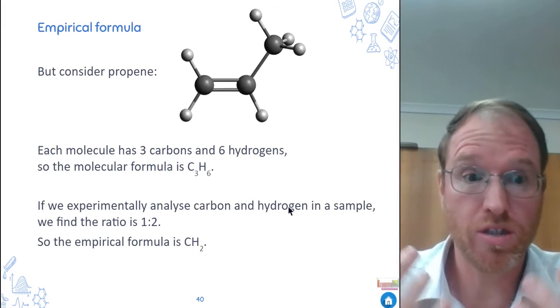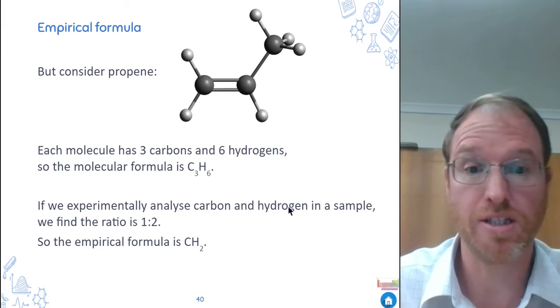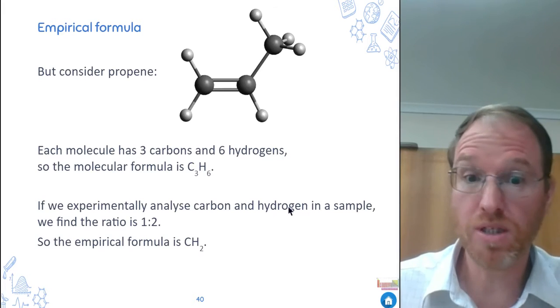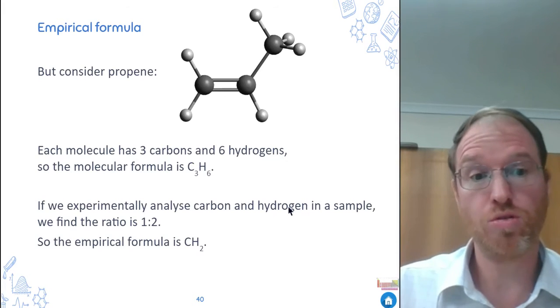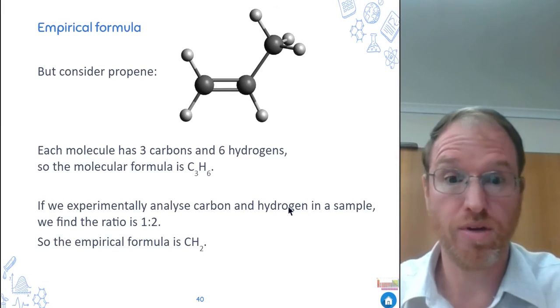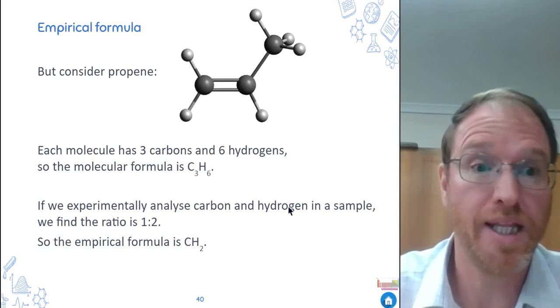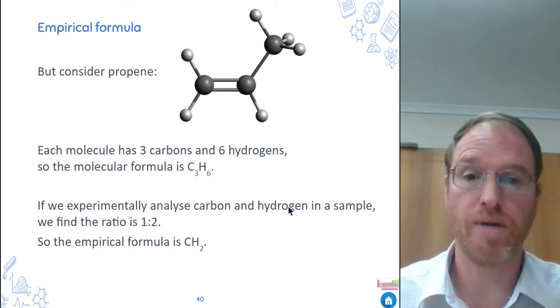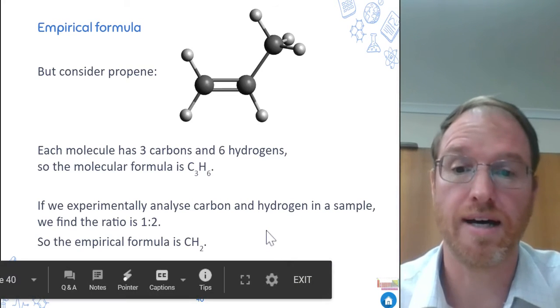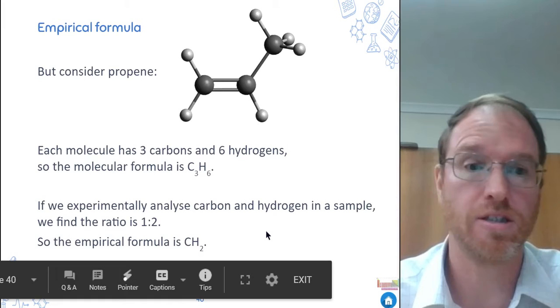We don't know what it is. We would just know it's CH2 as an empirical formula, meaning it could be CH2, it could be C2H4, it could be C3H6, as long as there's twice as many hydrogens as carbon. We don't know the molecular formula, but we know that experimentally there's twice as many hydrogens as carbons. That's why empirical formula is important.